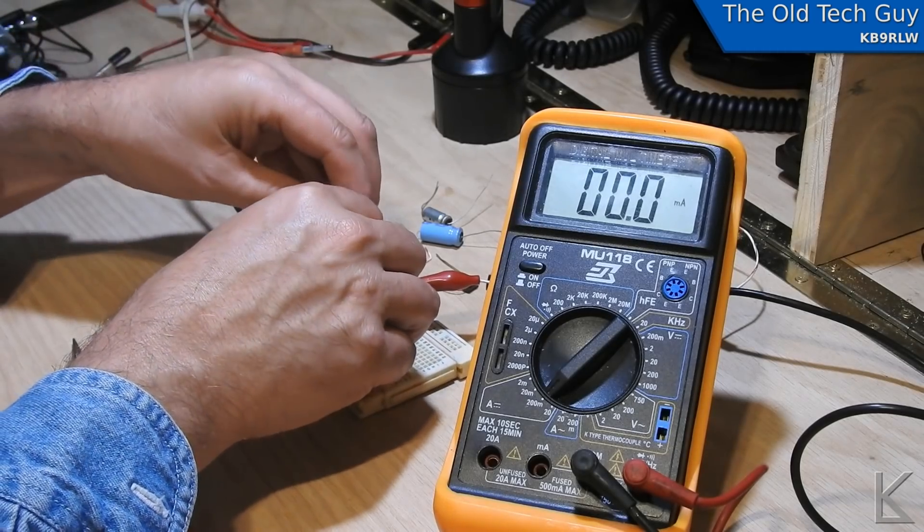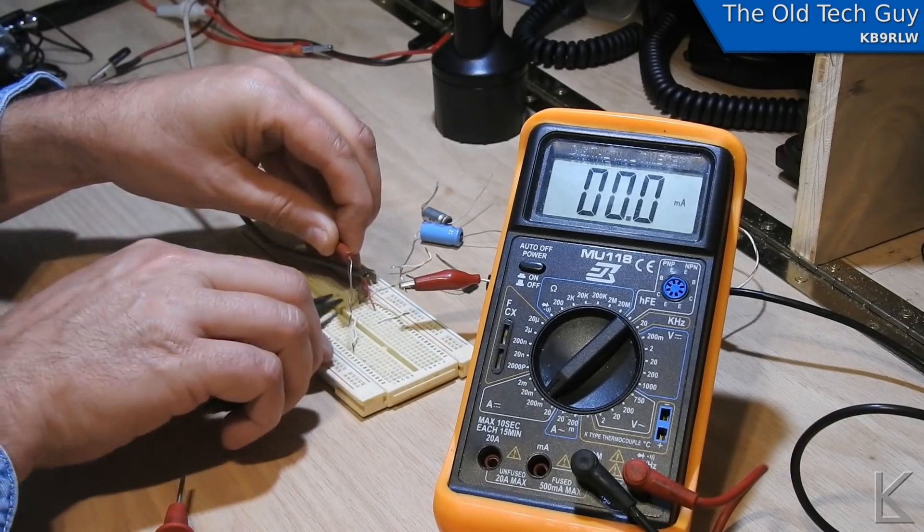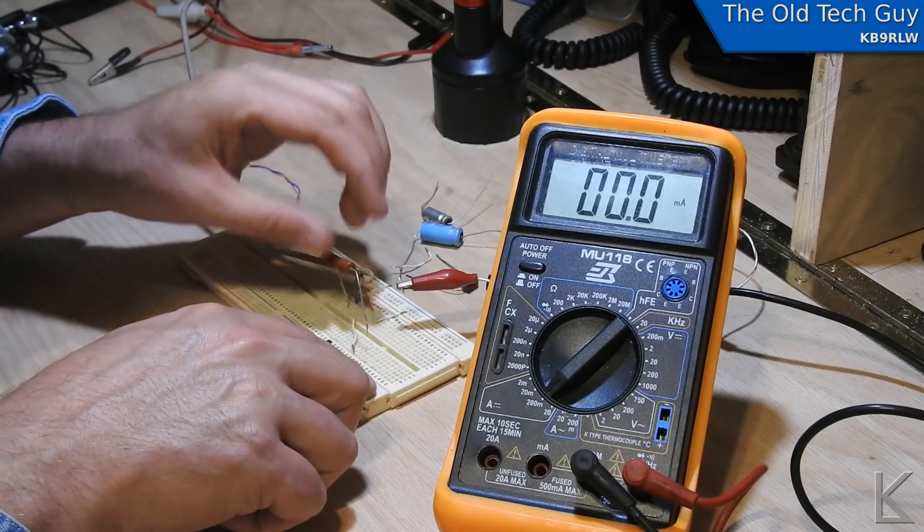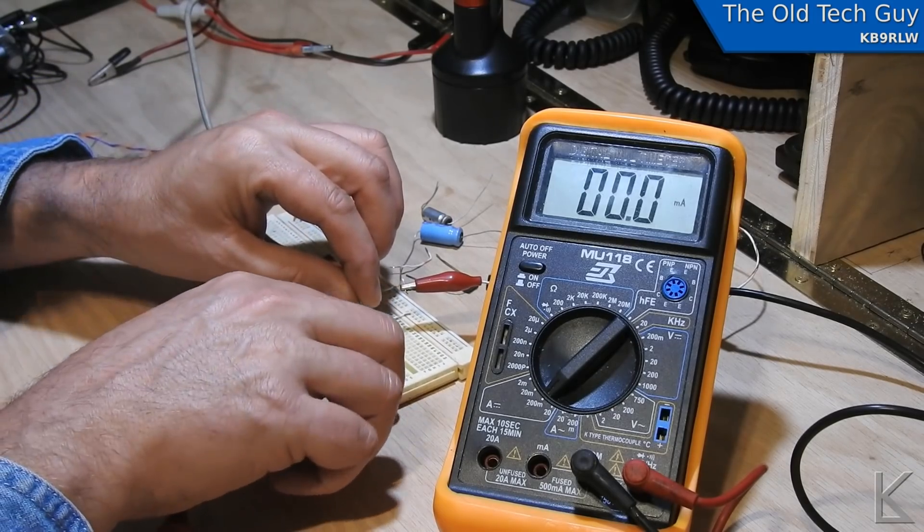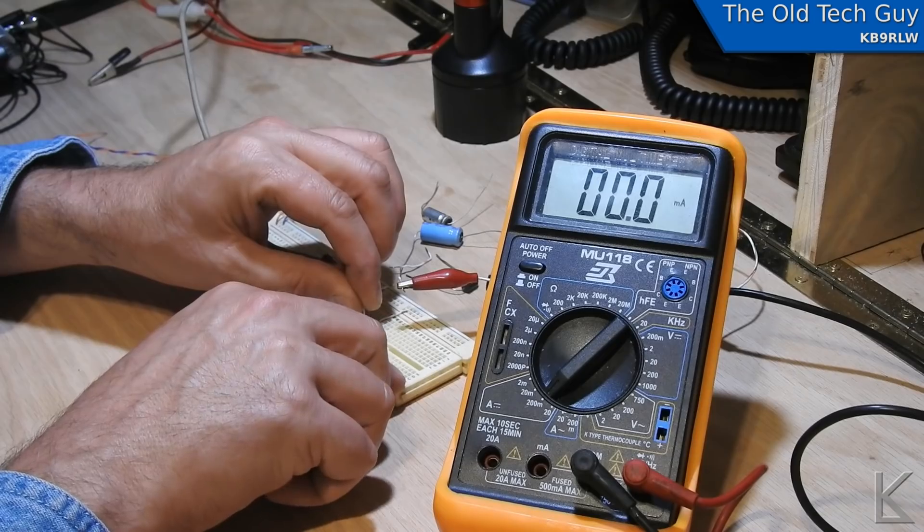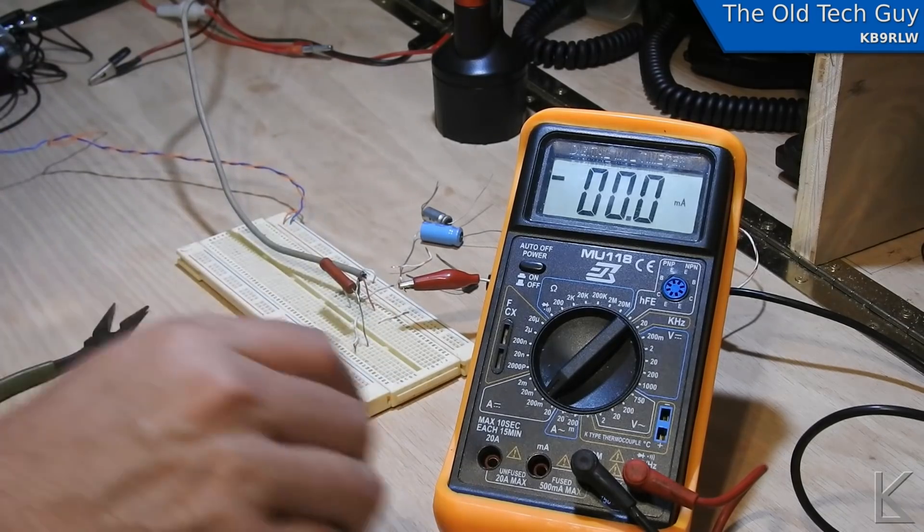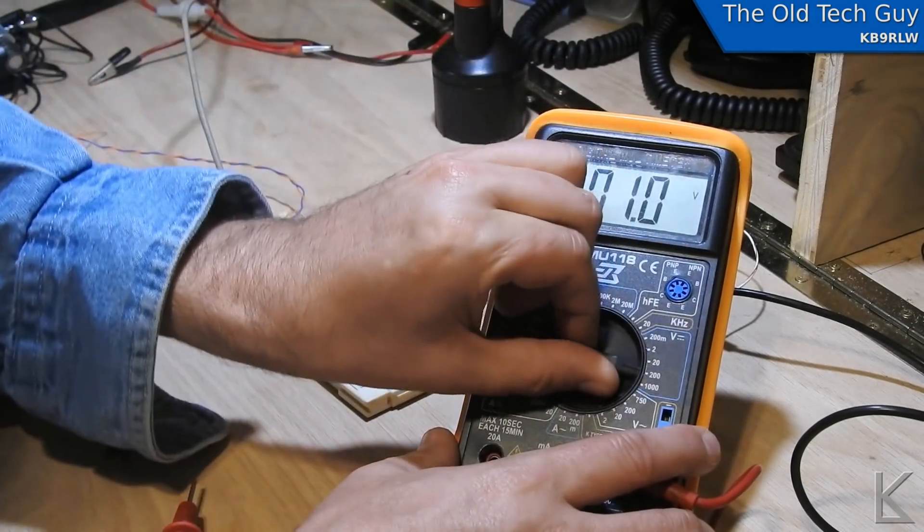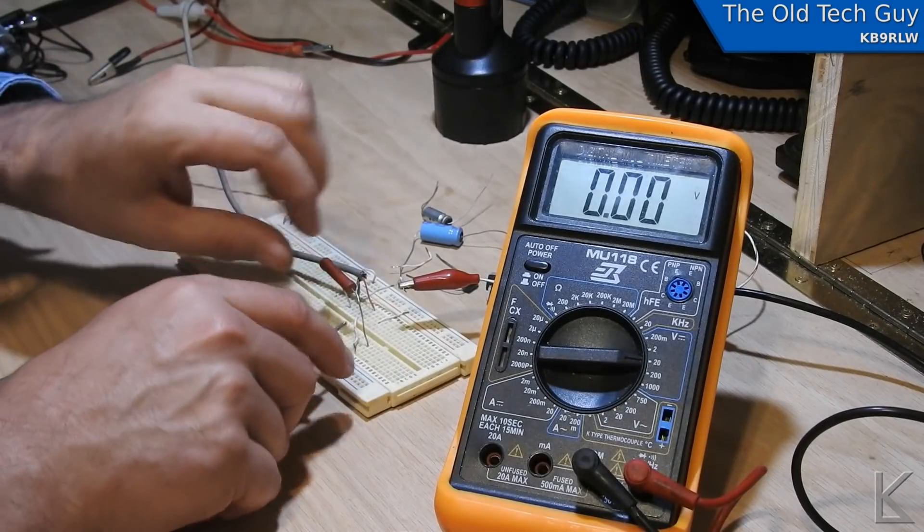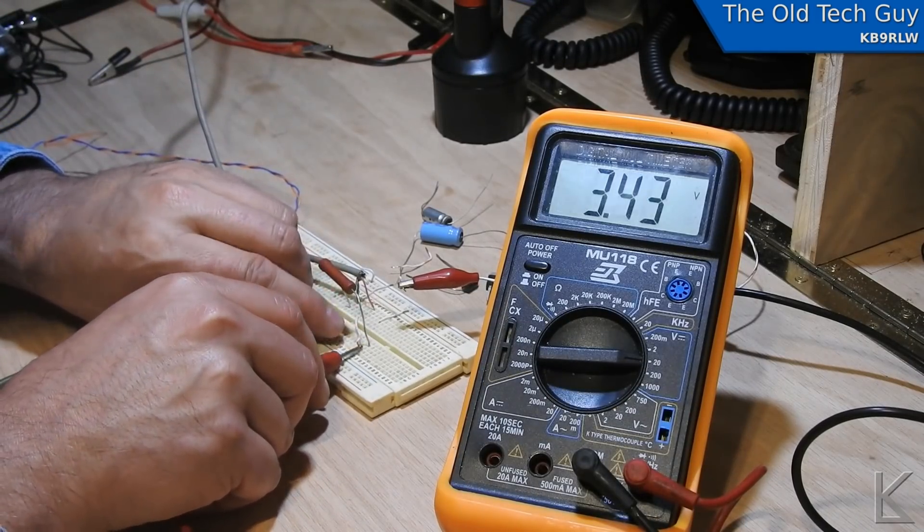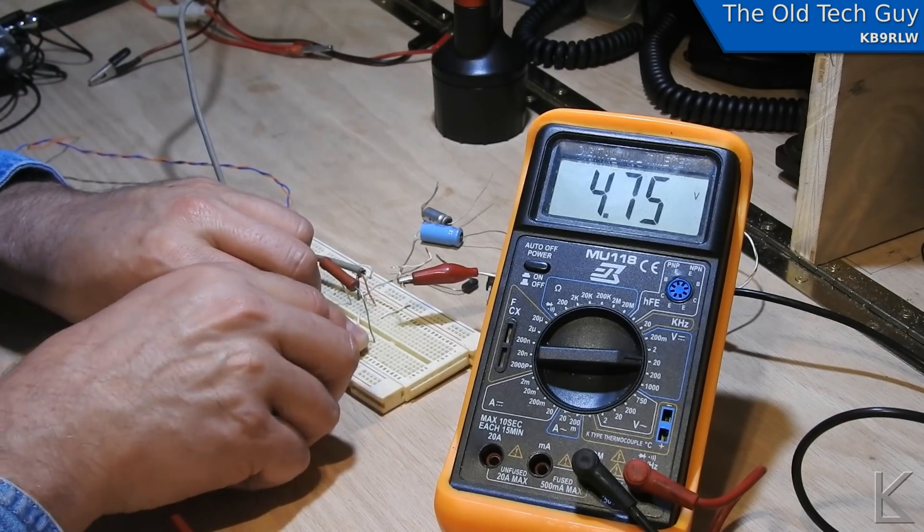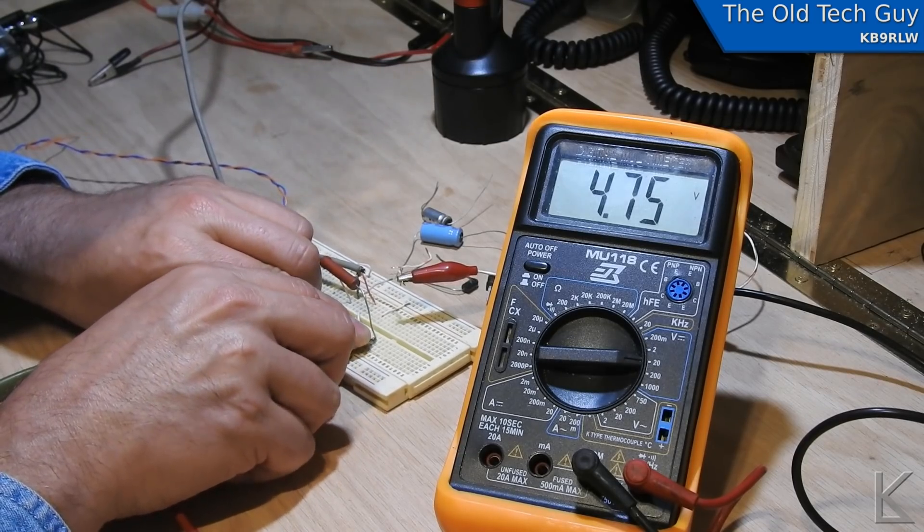So let's get this resistor in here. Okay. We're back to measuring voltage. So there's our voltage without the resistor. 4.75. And once we put it under load,